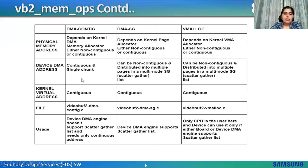DMA-contig is used when the device DMA engine doesn't support scatter-gather lists and needs only contiguous addresses. DMA-SG is used when the device DMA engine supports scatter-gather lists. Vmalloc is used when there is only one CPU user and the device can use it only if the board or device DMA engine supports the scatter-gather list.